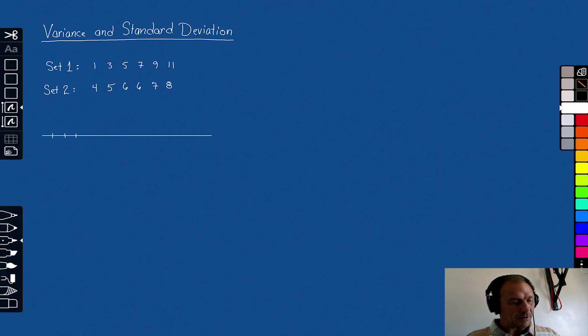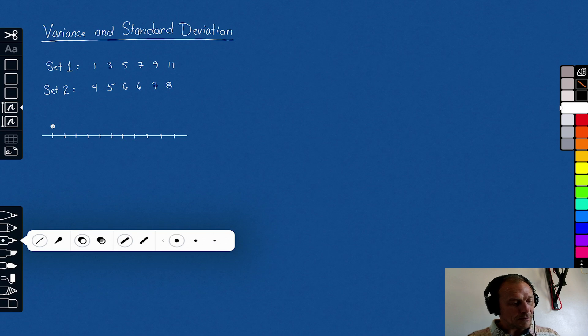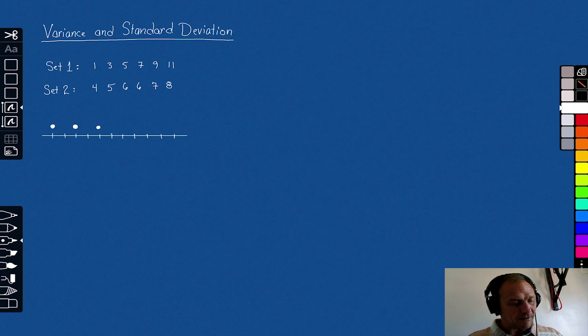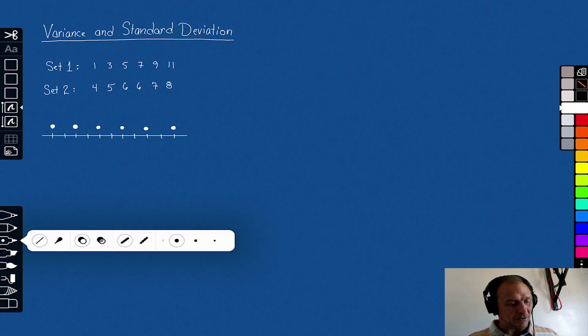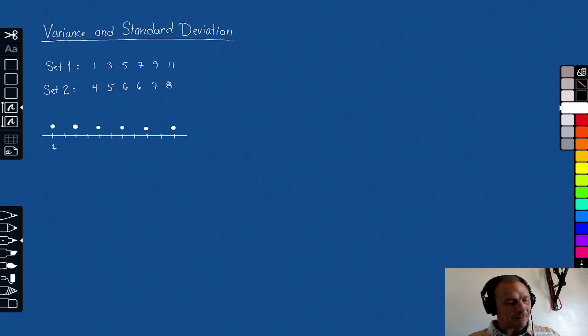Obviously my dot plot is going to need to go to 11. So here's 1, 2, 3, 4, 5, 6, 7, 8, 9, 10, 11. I'll put set one on the top. My dots are at 1, 3, 5, 7, 9, and 11. I should label those numbers just so in case we need to reference them.